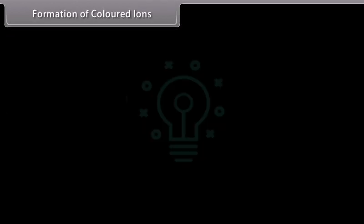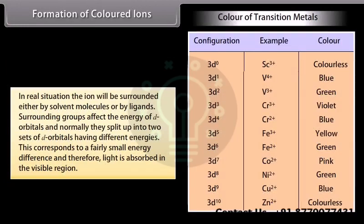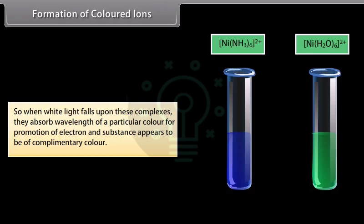Formation of colored ions: In a free isolated gaseous transition metal ion, the 5 d-orbitals are degenerate. In real situations, the ion is surrounded by solvent molecules or ligands, which affect the energy of d-orbitals and split them into two sets of different energies. This corresponds to a fairly small energy difference, so light is absorbed in the visible region. When white light falls upon these complexes, they absorb a particular wavelength and the substance appears to be of the complementary color.